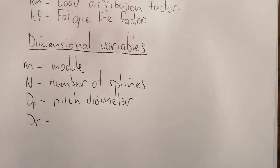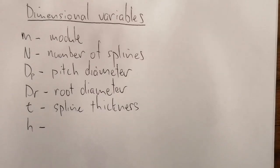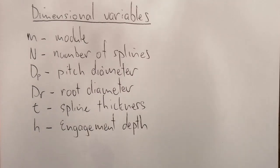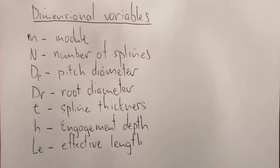DR is known as the root diameter. T is the spline thickness. H is the engagement depth. And lastly, LE is the effective length. The module has an effect on all dimensions — any dimension worked out is based on the module and is captured into all dimensional formulas you use in order to get the right answer relative to the module.